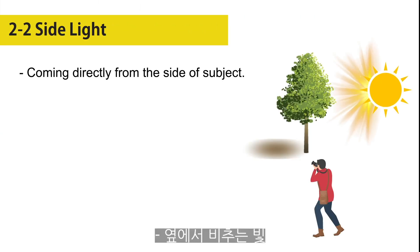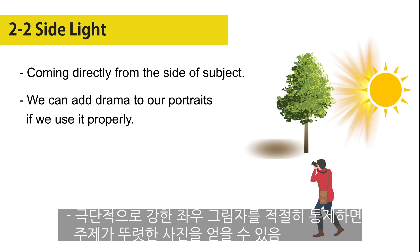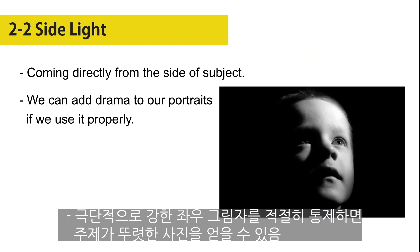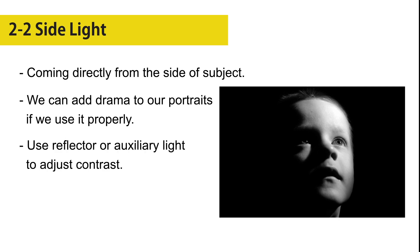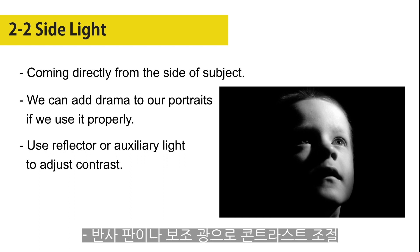Side light is coming directly from the side of the subject. The subject is split down the middle — half in the light and half in the dark. Even though it is not a common choice of light for portrait photography, we can add drama to our portraits if we use it properly. To adjust contrast if necessary, use a reflector or auxiliary light.